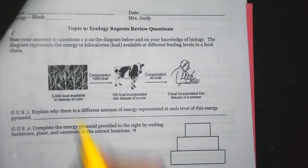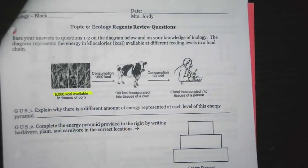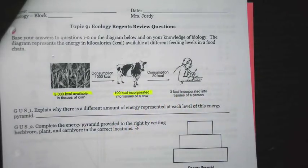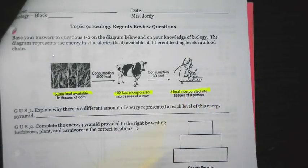The diagram represents the energy in kilocalories available at different feeding levels in a food chain. First, we have corn with 5,000 kilocalories available. Next, we have a cow, 100 kilocalories available. And finally, there's a person eating which has 3 kilocalories available.